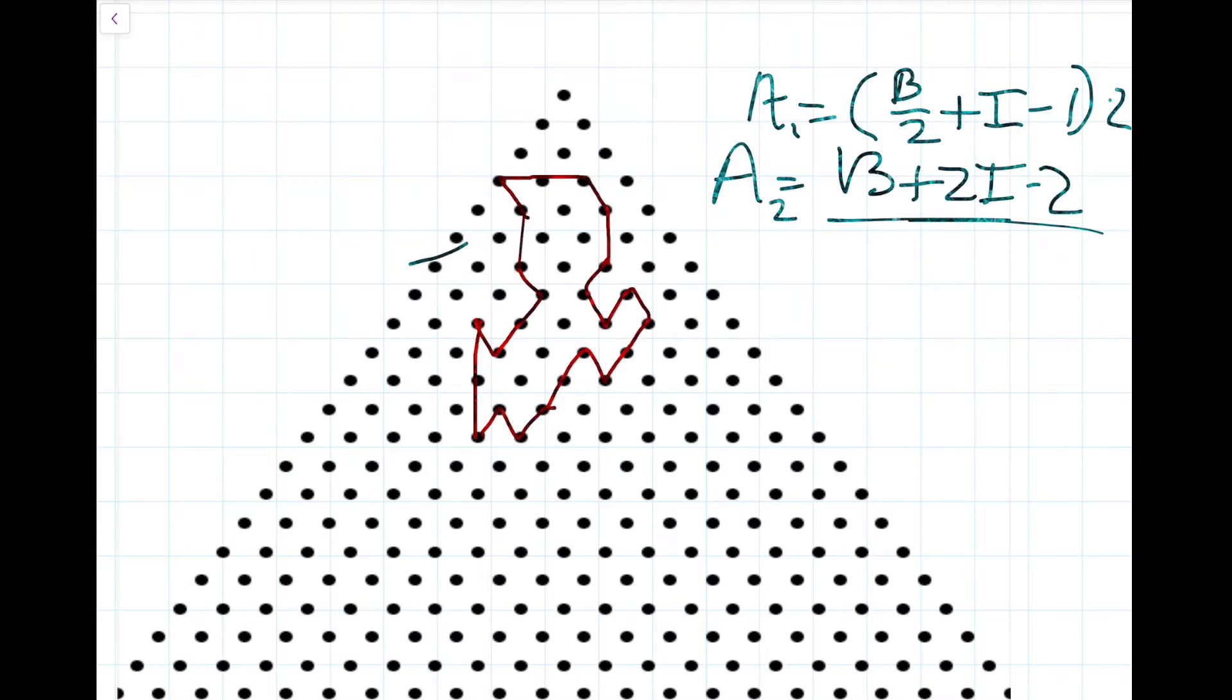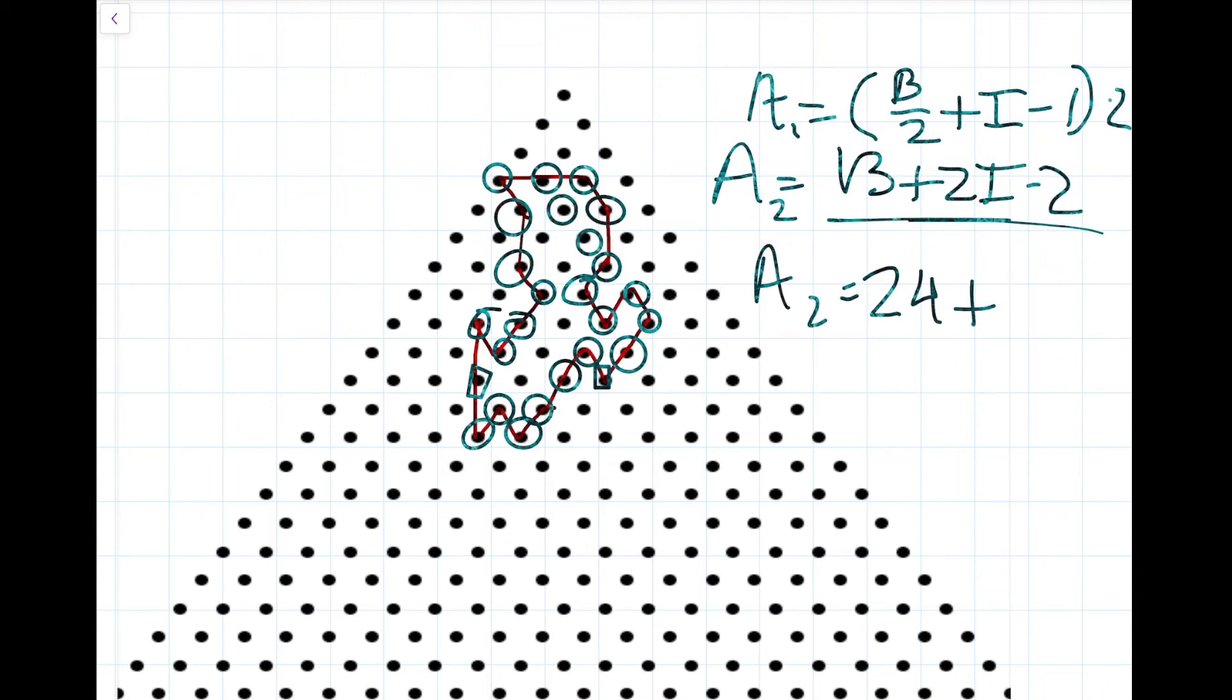So let's count how many there are. There is 1, 2, 3, 4, 5, 6, 7, 8, 9, 10, 11, 12, 13, 14, 15, 16, 17, 18, 19, 20, 21, 22, 23, 24. Okay, so we have 24 boundary points.